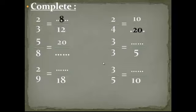Here we have 3 over 3 equals space over 5. As we learned before, 3 over 3 equals 1, and any number over the same number equals 1, so 3 over 3 equals 5 over 5. Next: 2 over 9. 9 becomes 18, so we multiply by 2: 9 by 2 equals 18, so 2 by 2 equals 4. Then: 3 over 5 equals space over 10. 5 becomes 10, so we multiply by 2: 3 times 2 equals 6.